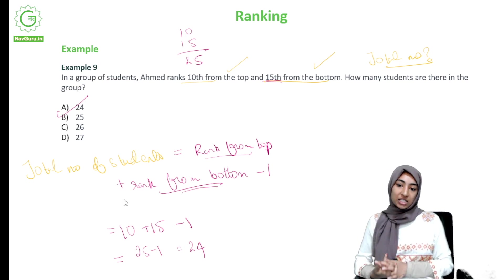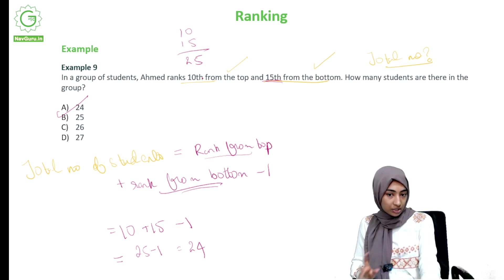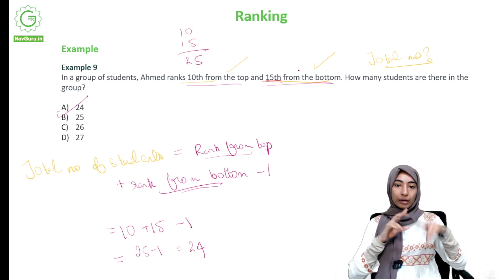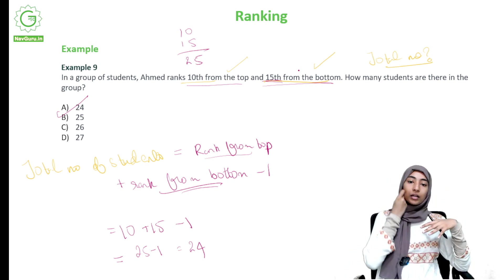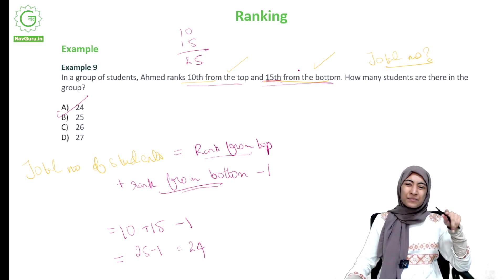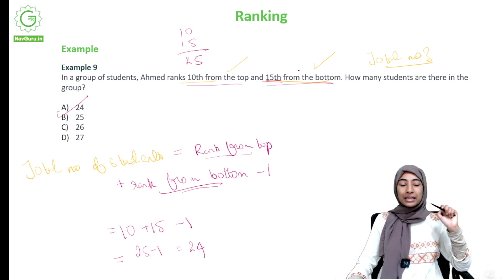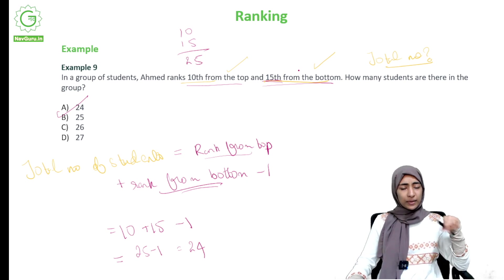So we've done a range of questions from ranking. Most questions come from those two formulae — finding rank from the end, or finding the total number of students — along with linear and circular arrangement. Ranking might seem tricky at first, but once you do lots of questions it becomes very easy. That's it, we're done with ranking.